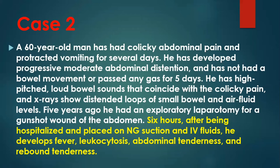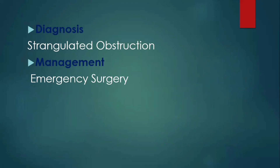Let's make our diagnosis by reviewing the case again. Our patient initially presented like a case of incarcerated hernia and was treated with conservative management, but unfortunately conservative management has failed. He now shows early signs of strangulated hernia: fever, leukocytosis, abdominal tenderness, and rebound tenderness. This patient has strangulated obstruction and requires emergency surgery. The obstruction can be either complete or partial.